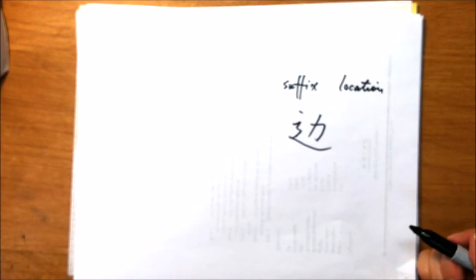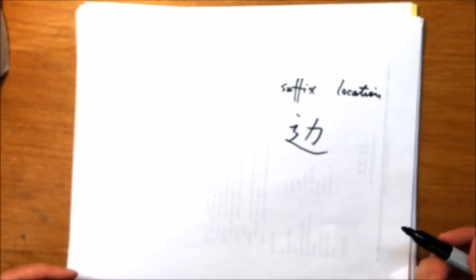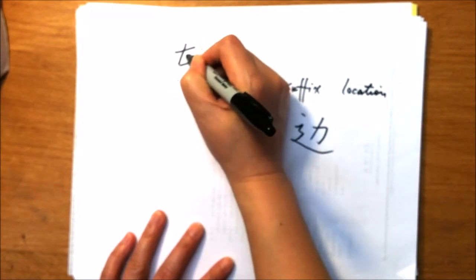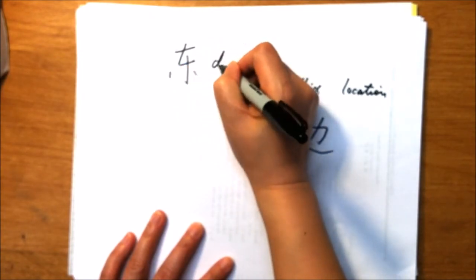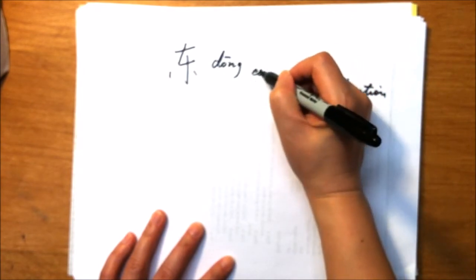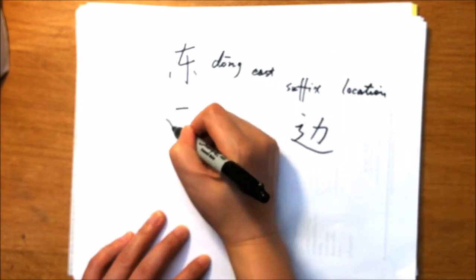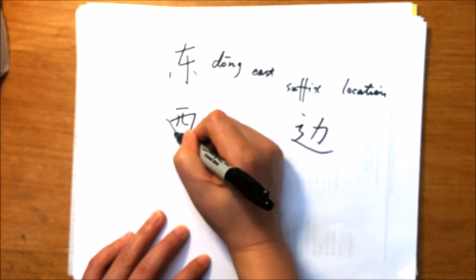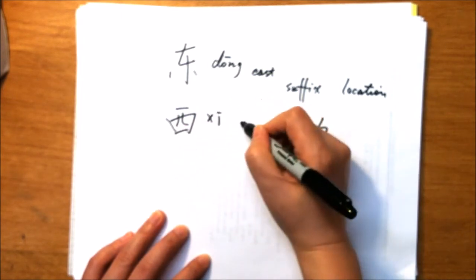Let's see some characters to describe direction or location. 东, east. 西, west.